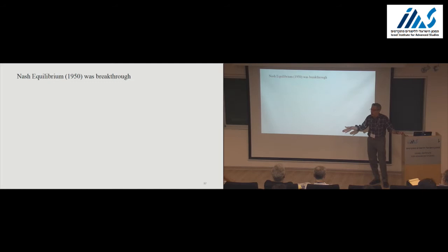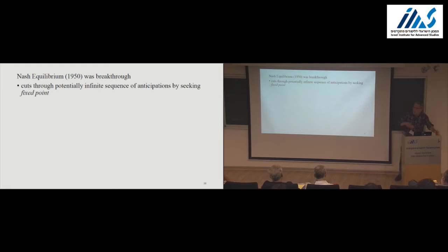Now, a breakthrough, a theoretical breakthrough in this direction was the developments by John Nash of what we now call Nash equilibrium. Nash called it an equilibrium point. Because a Nash equilibrium cuts through the potentially infinite sequence of anticipations. It looks for a fixed point in anticipations.